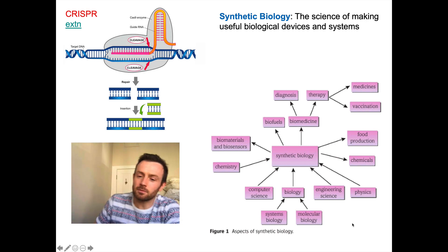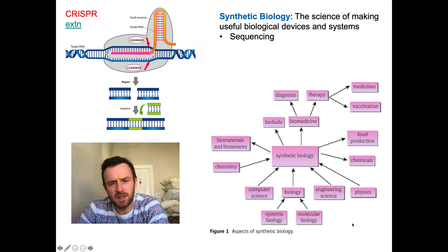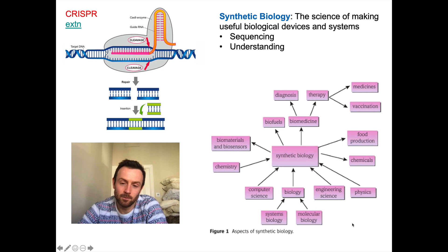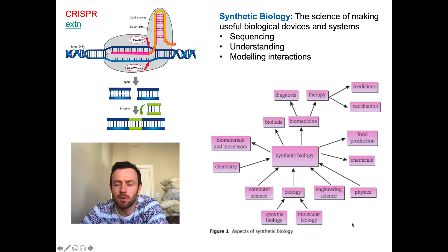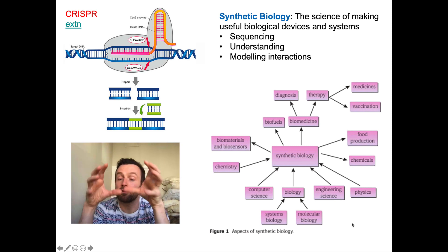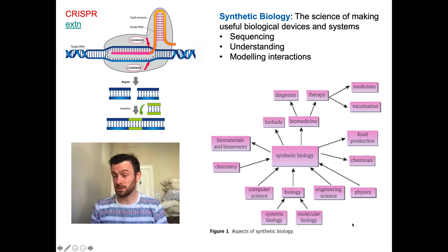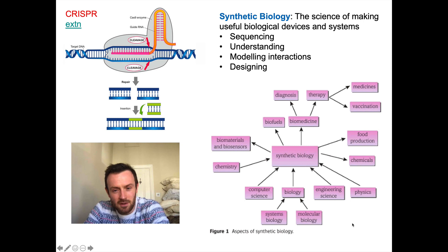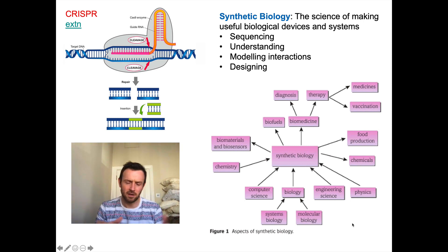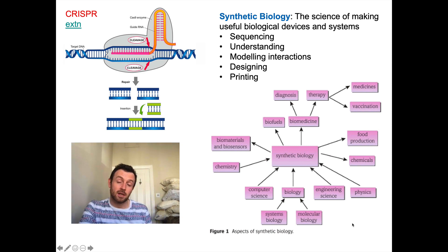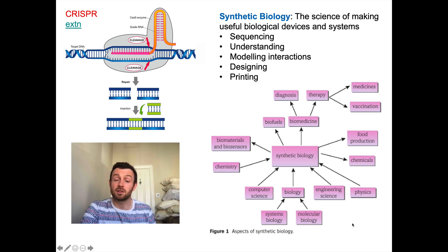Synthetic biology involves sequencing DNA, understanding what different DNA codes do, and modelling interactions between genes. Synthetic biologists try to have two, three, or four genes working together — fully understanding how they control each other — to create modular parts that can be assembled into larger organisms. They design the different genes, put them together in a code, model it on computers to see if it will work, and can ultimately print the code using a DNA printer.